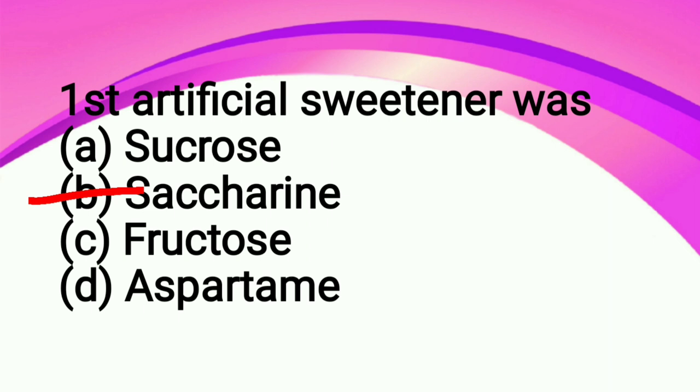Which artificial sweetener has the highest calorific value: option A saccharine, option B aspartame, option C alitame, option D dulcin. So the correct answer is option C alitame. Among artificial sweeteners, alitame has the highest calorific value. Compared to normal sugar or cane sugar, it is 600 times sweeter.